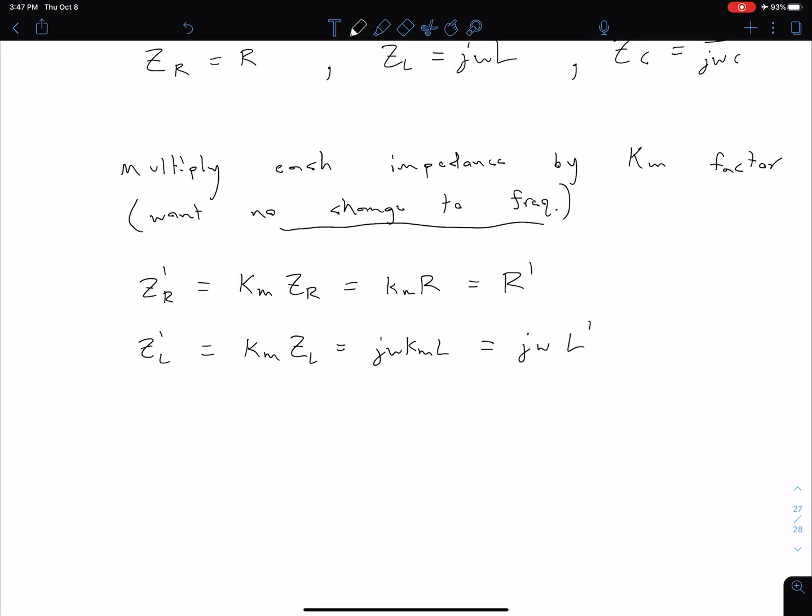Similar thing with our capacitance. We can say ZC' equals Km times ZC. We can put Km in the numerator, but then we can write it as jωC divided by Km. But again, we don't want to be adjusting our frequency. So we say this is 1/(jωC').